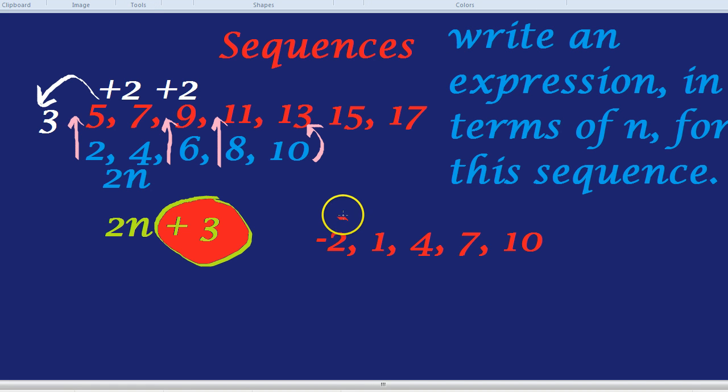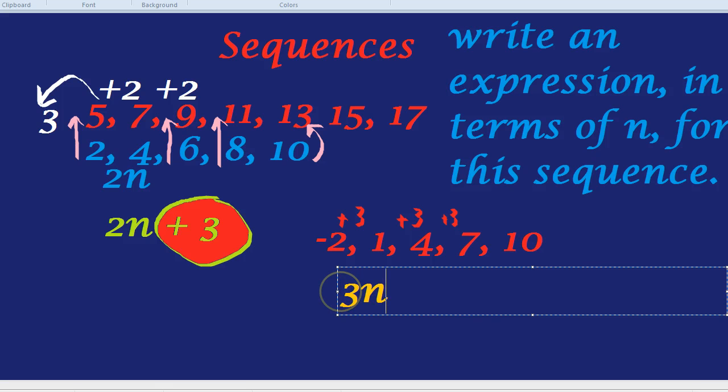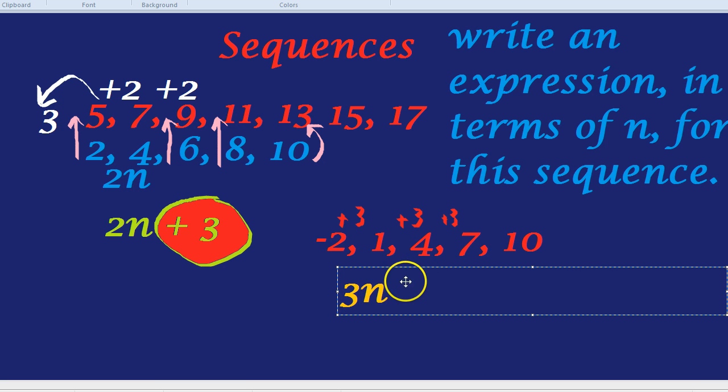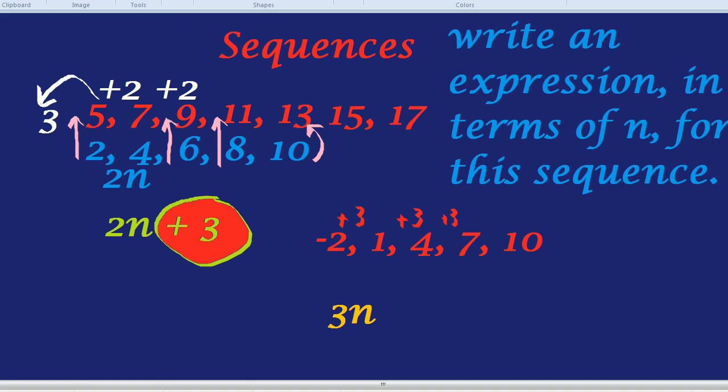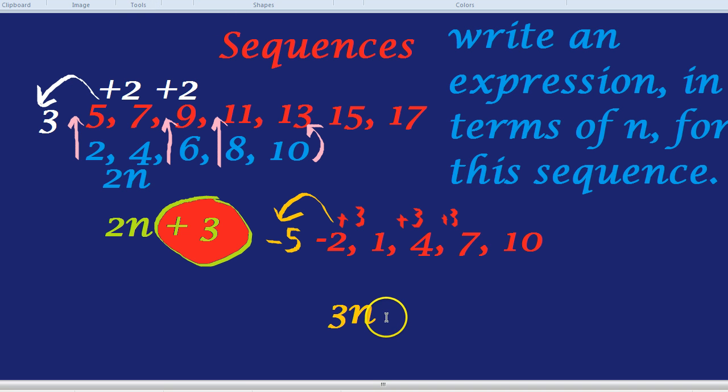If it's going up in 3's, we write 3n. How would we get the extra bit? Because it's not just 3n. 3n would be 3, 6, 9, 12, which is not what we've got here. So, let's use that fancy method and go back 1 in the sequence. 4, 1, minus 2, going back 1 in the sequence would be minus 5. Because it's going down in 3's if it goes backwards. So, our answer for this sequence would be 3n minus 5.